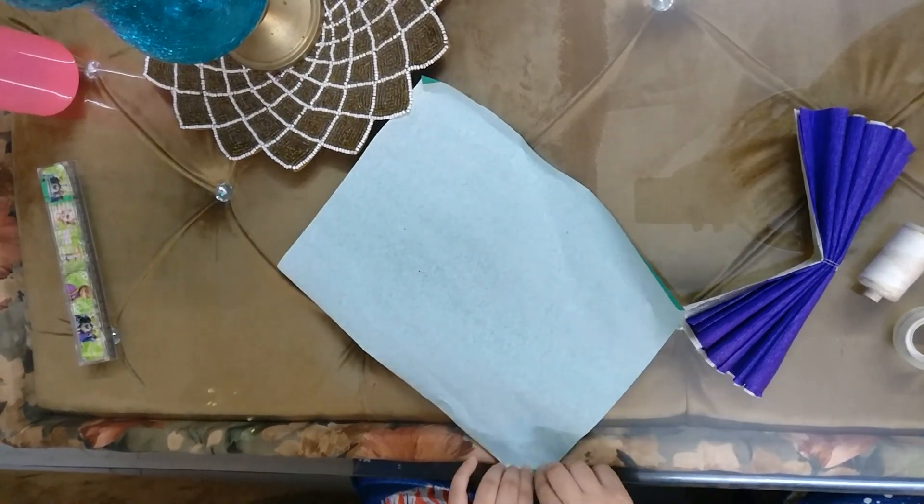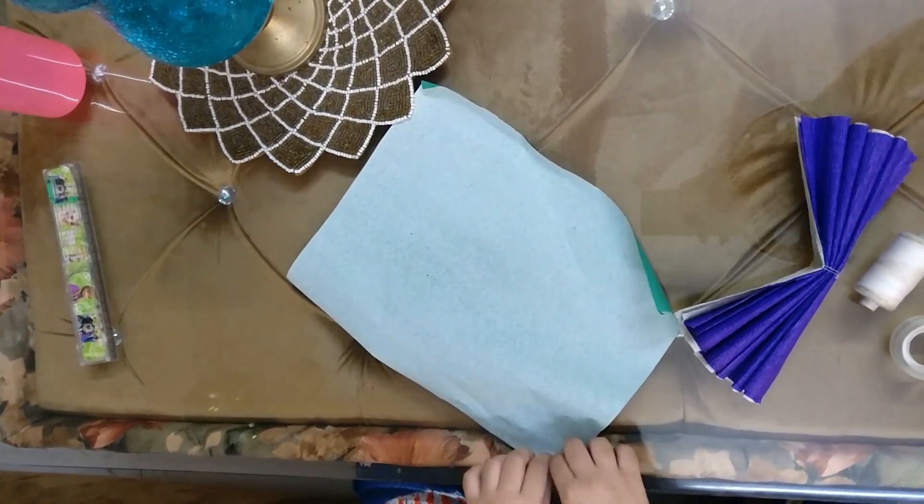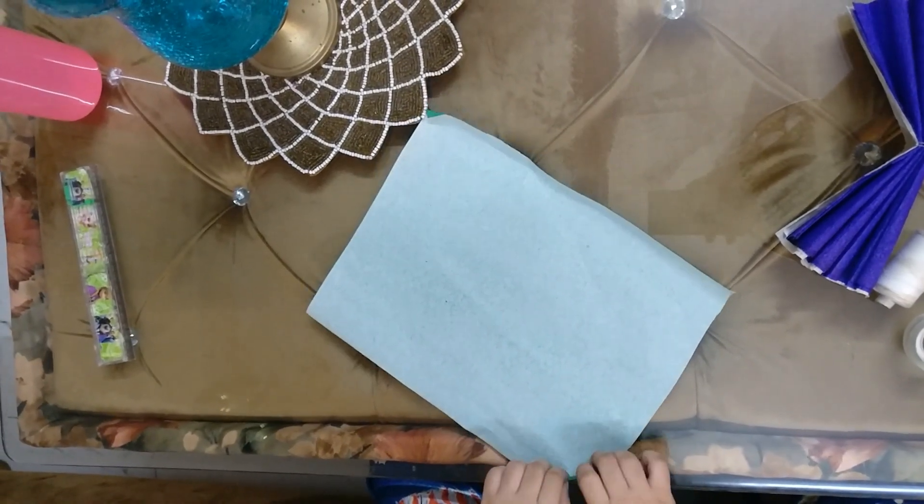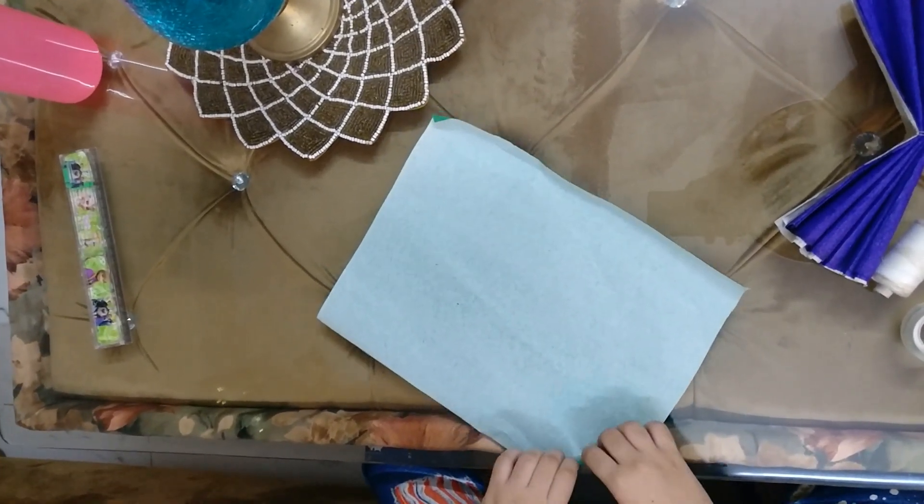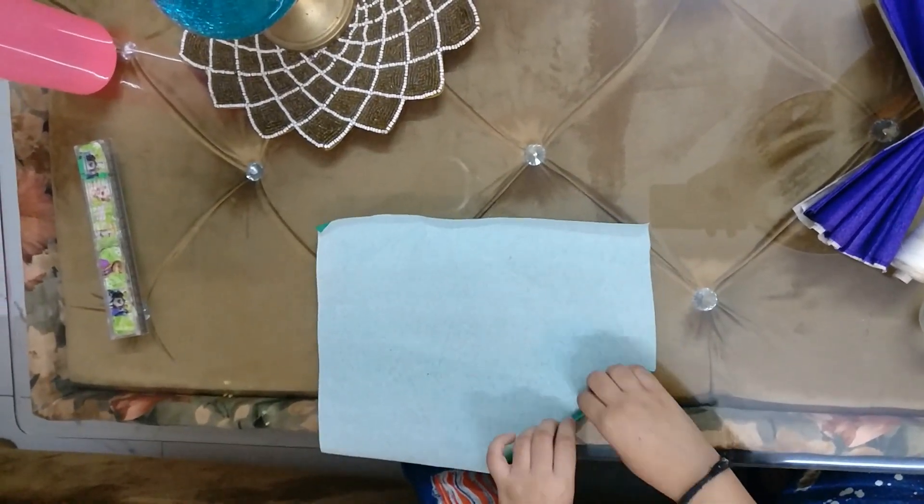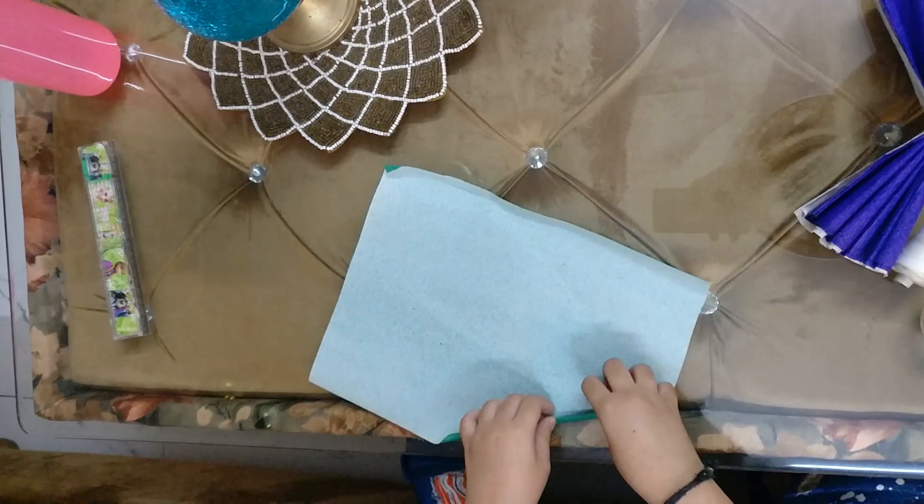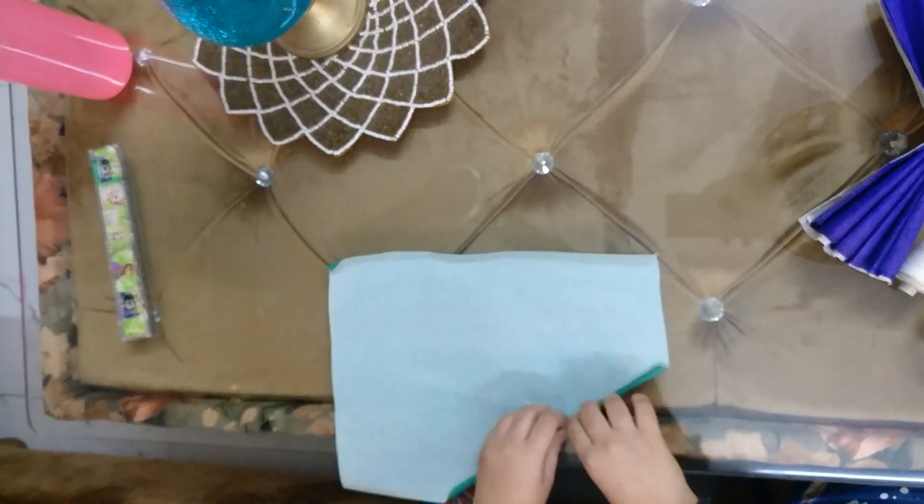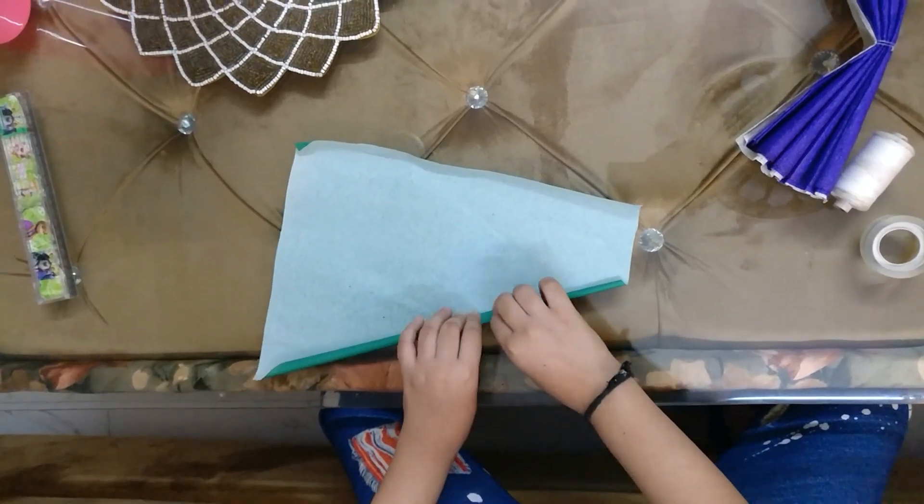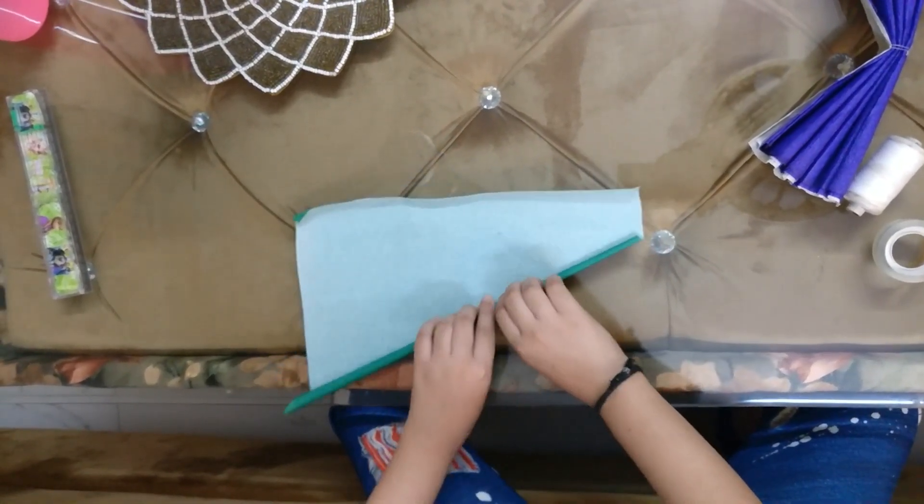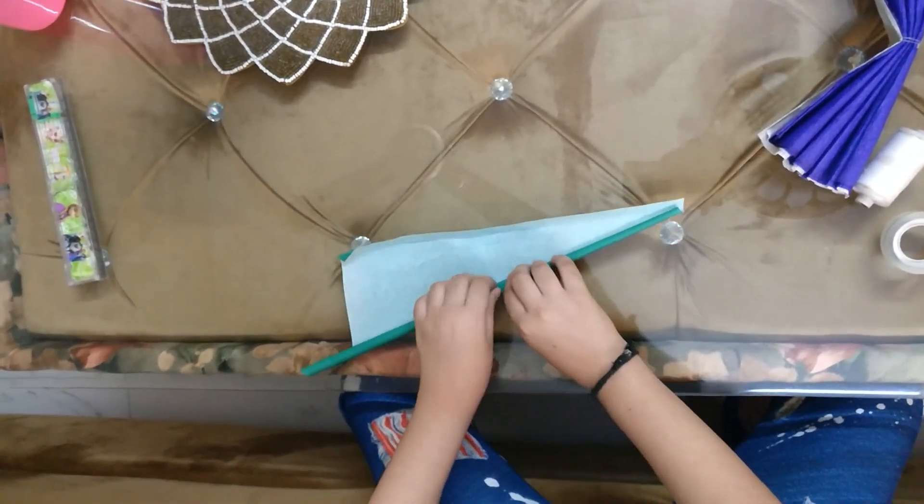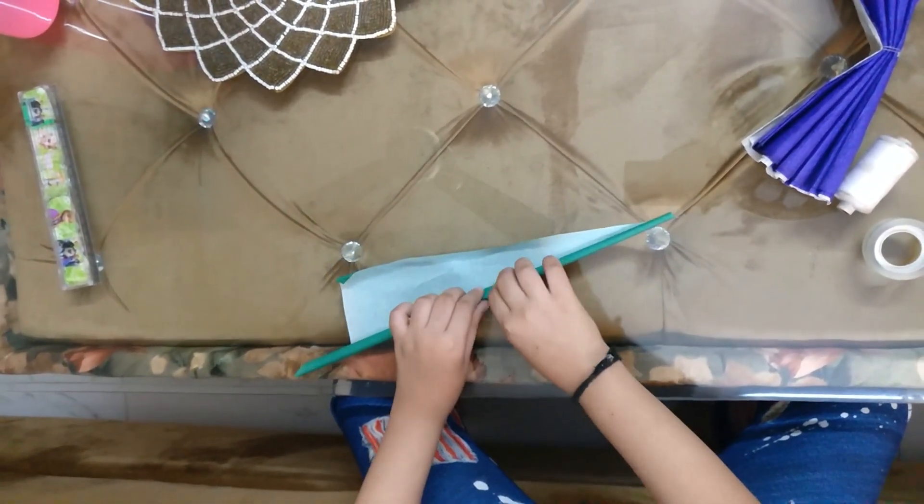For the stem you need to take a green sheet only. You are folding it. And fold it really thin, as thin as you can do it. You are almost there.